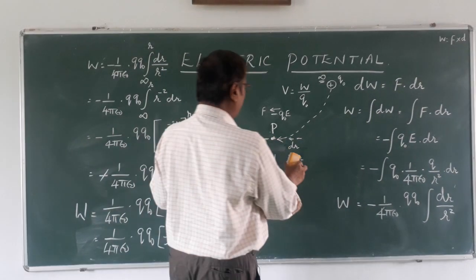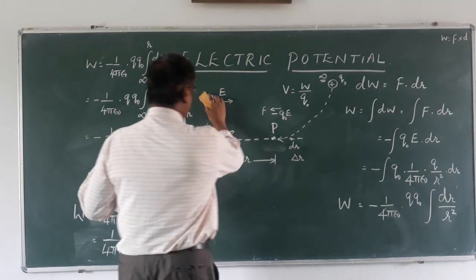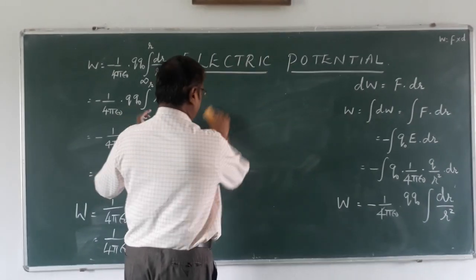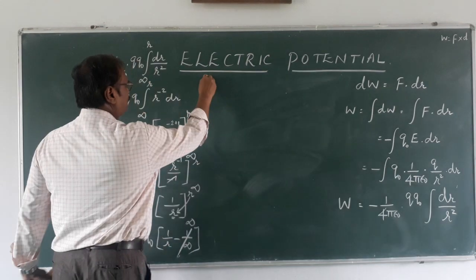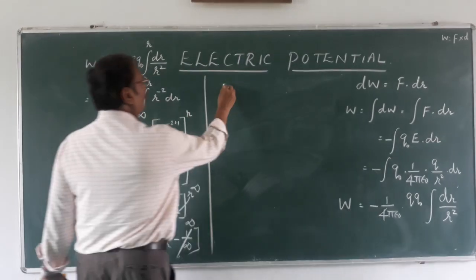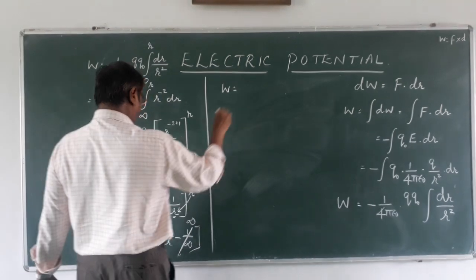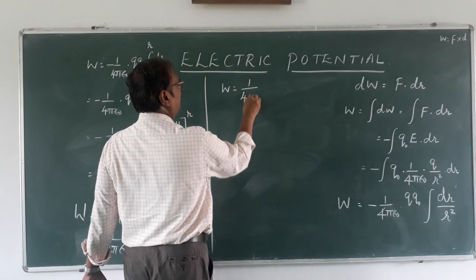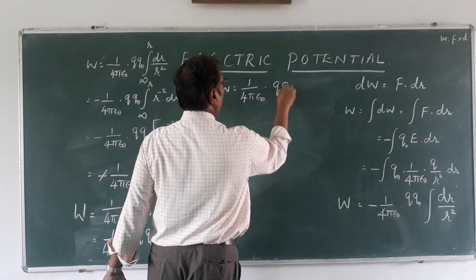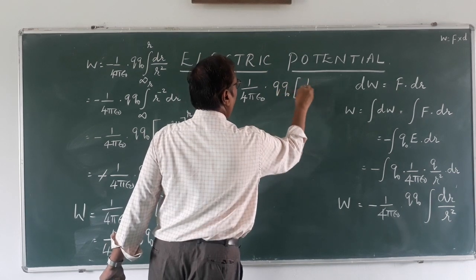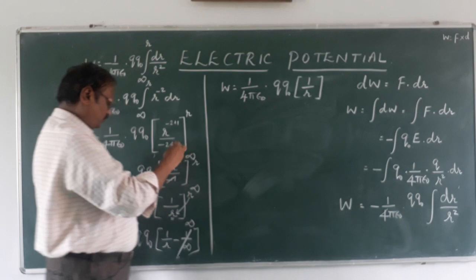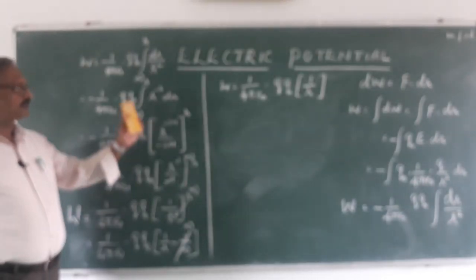Let me erase this part. The next two steps give us the final result. Work done is equal to 1 upon 4 pi epsilon naught into q q naught into 1 upon r. This is the work done we have derived.